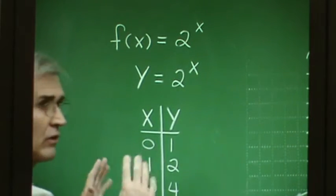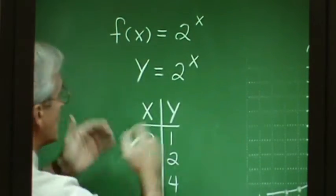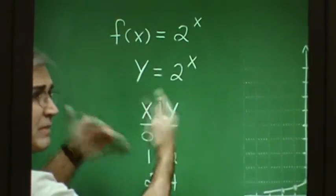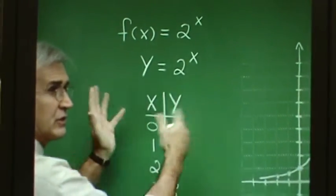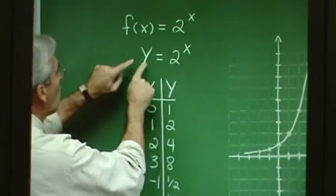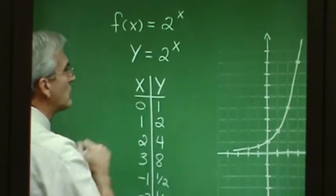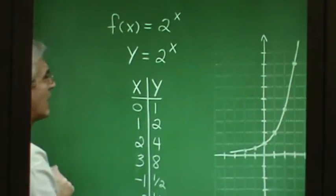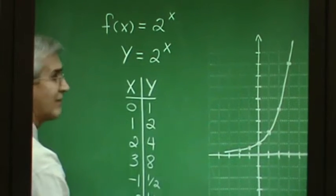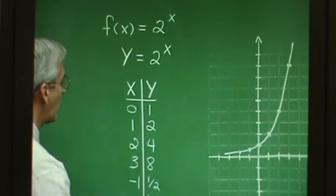Let's investigate the graphs of exponential functions. We'll start with this basic function and then make some changes to see how that affects the graph. We begin with y equals 2 to the x power. Using a point-plotting method, I would build a table of values and plot a few points.